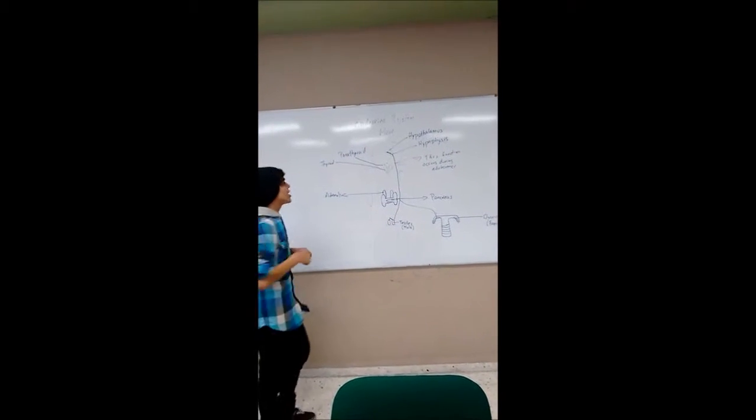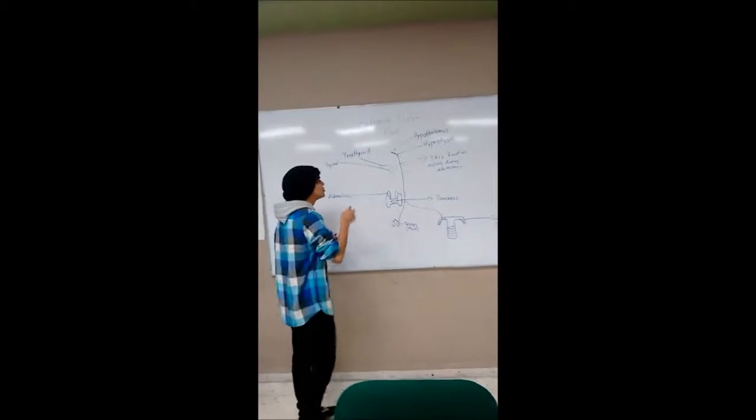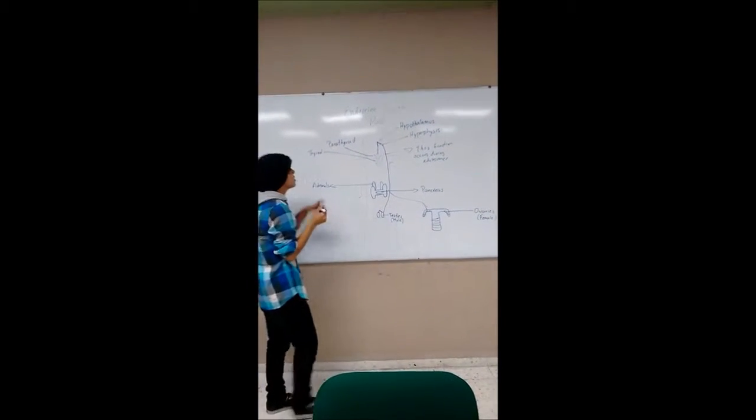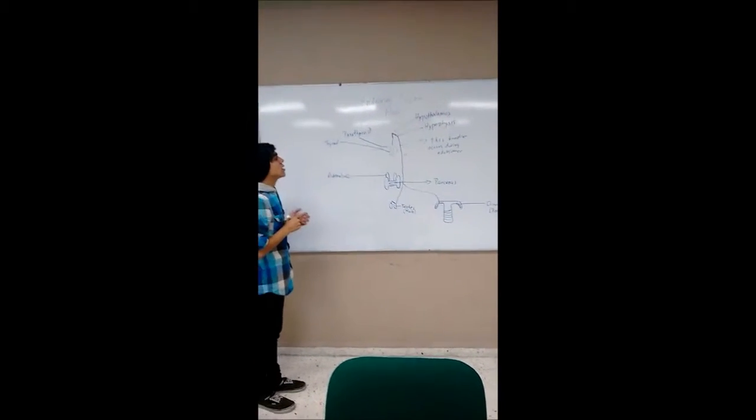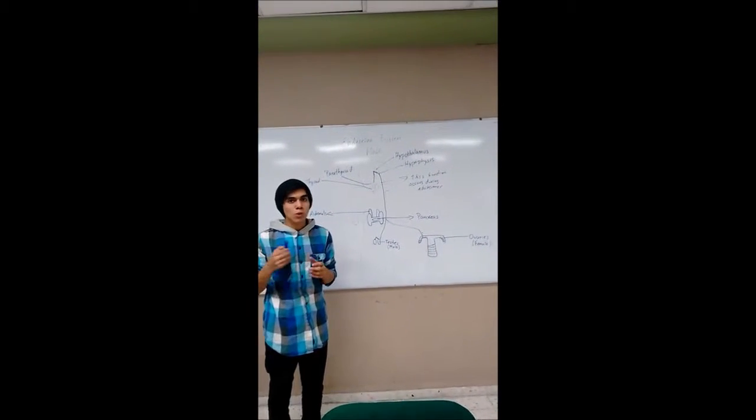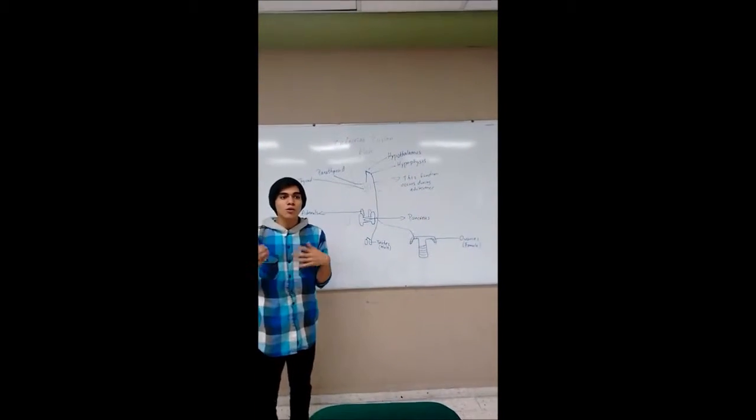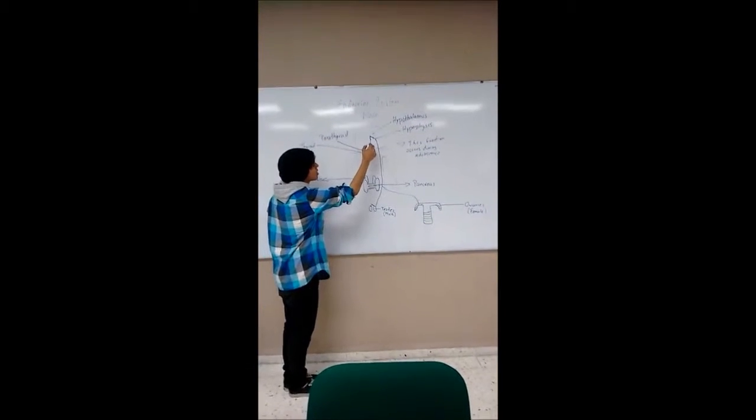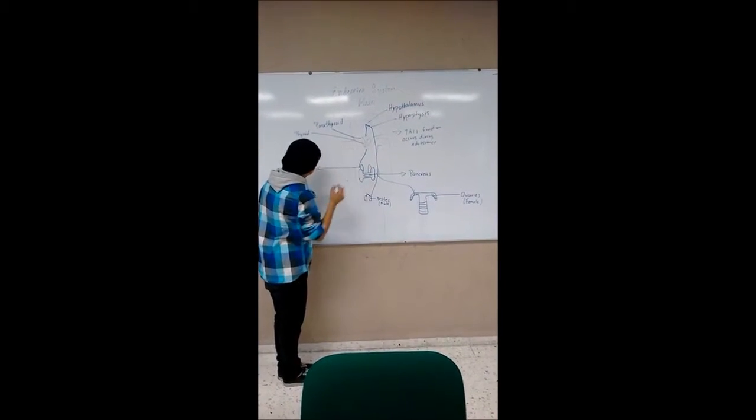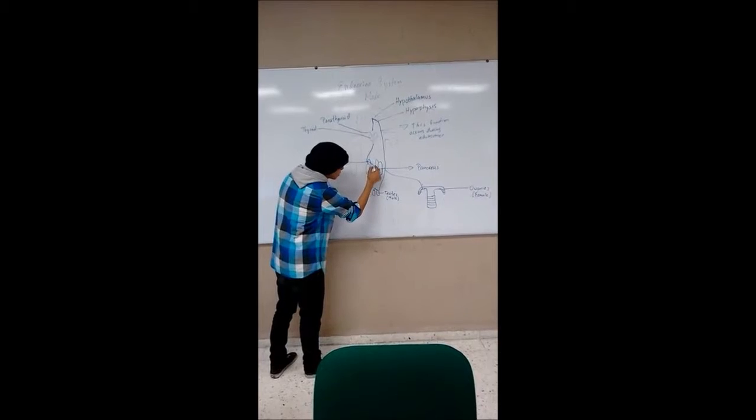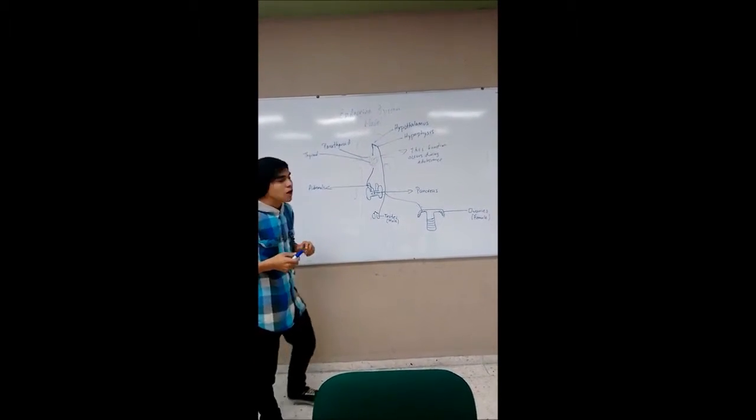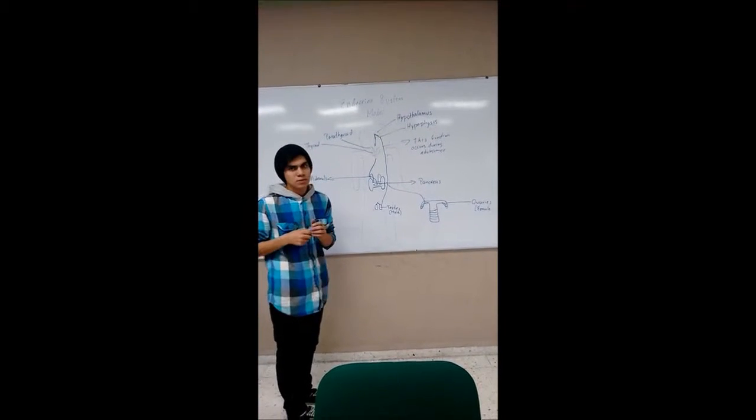Then the hypothalamus sends the function to the thyroid, and both of them develop the growth of our body. This gland sends the function to the adrenals and pancreas for the function of metabolism.